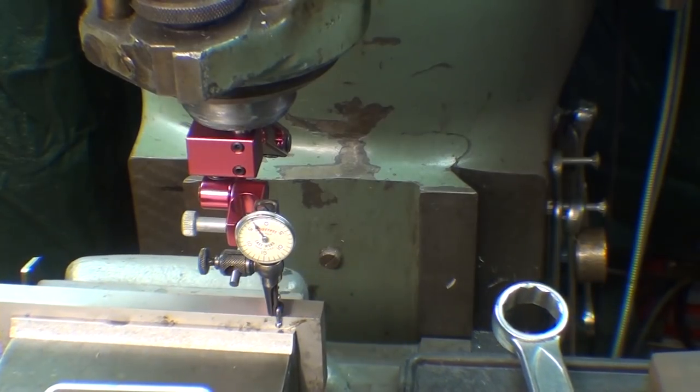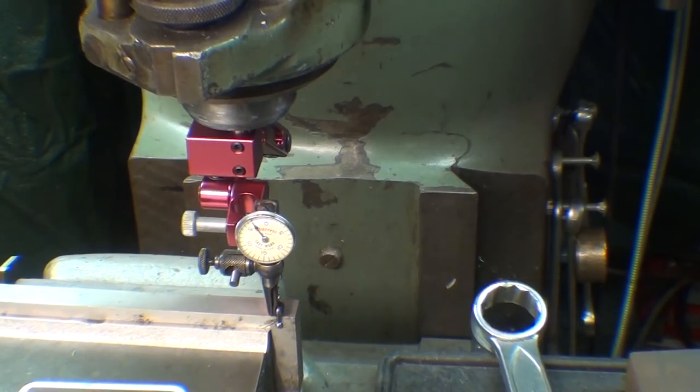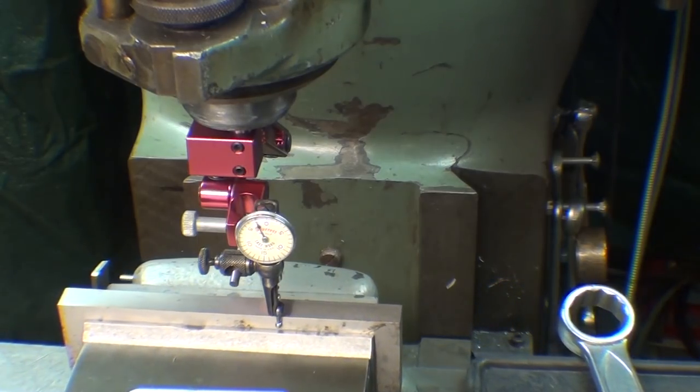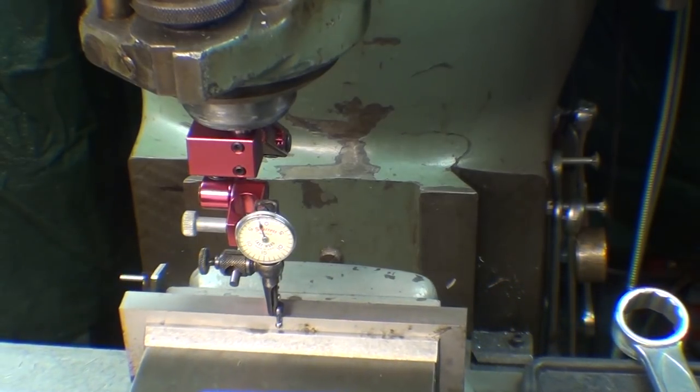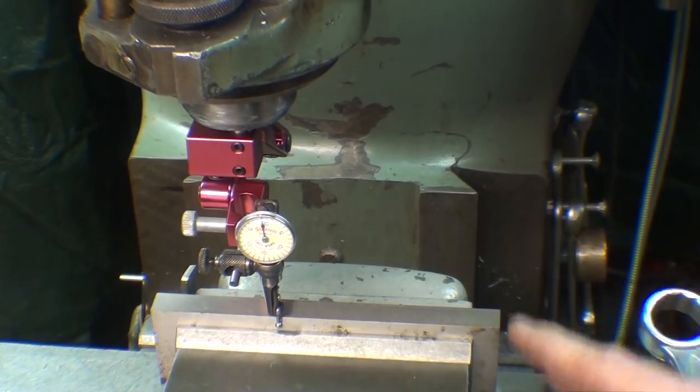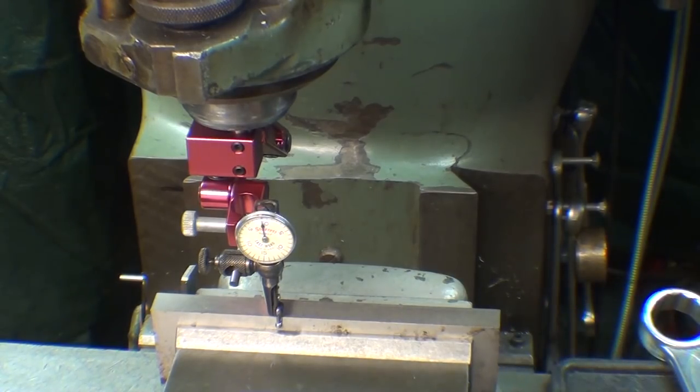I think I'll adjust that using the cross feed and surprisingly I am about three or four thousandths off. Now, there isn't any way to correct that other than to take the keys off of the bottom. So, that's just some inherent problem with this vise and I'm not worried about that. I'm going to show you another way of doing that with another vise so that we get it perfectly on zero.